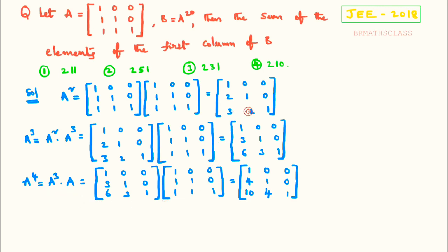Now observe the answers for A square, A cube, and A power 4. Based on this, I will write the general matrix A power k. You can observe that here 1 is there, here also 1 is there, here also 1 is there. So obviously, A power k also contains 1.